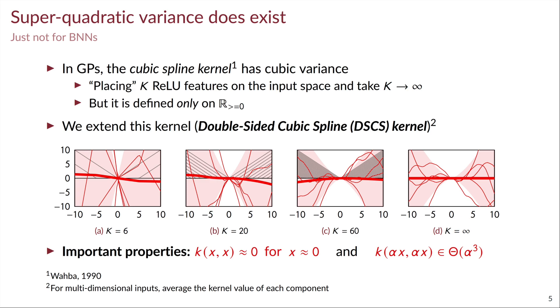And two properties of this kernel that are very useful for our analysis are that, first, the variance induced by the kernel is negligible if we evaluate points near the origin in the input space. And secondly, the variance of this kernel agrees with the cubic spline kernel, meaning that it has a cubic variance growth.